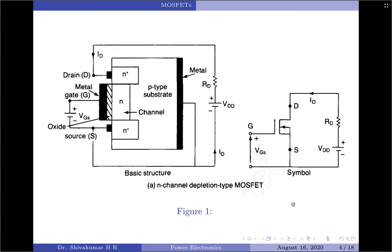Let us now discuss individually each type of MOSFET. For an N channel depletion type MOSFET, it is formed on a P type substrate with two heavily doped N+ silicon regions for low resistance connections. The gate is isolated from the channel by a thin oxide layer. The three terminals of the MOSFET are called drain, gate, and source.